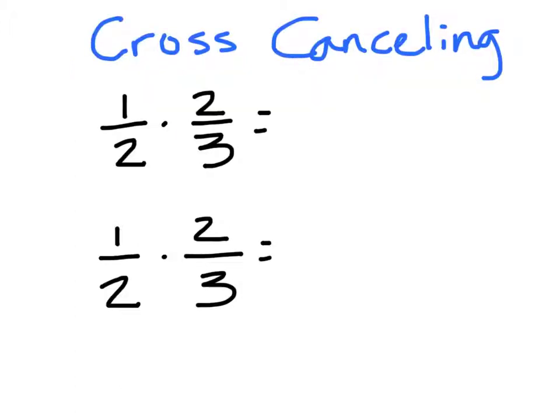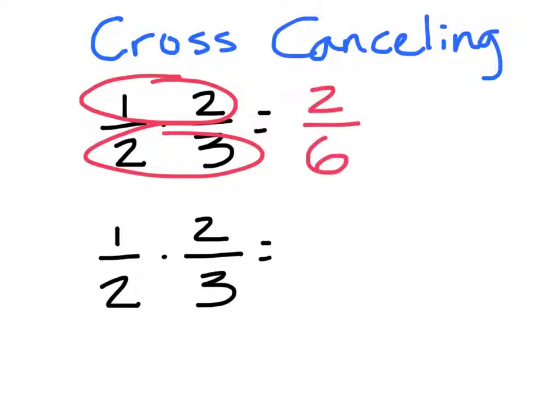The first thing that you need to understand before we jump into unit conversions are some underlying ideas. The first is the idea of cross-canceling. When we are multiplying fractions, we typically multiply the tops together and the bottoms together. So 1 times 2 is 2, and 2 times 3 is 6. The fraction 2 sixths can be simplified because there's a 2 in the top and the bottom. So I can cancel this, dividing both top and bottom by 2, and get 1 third.